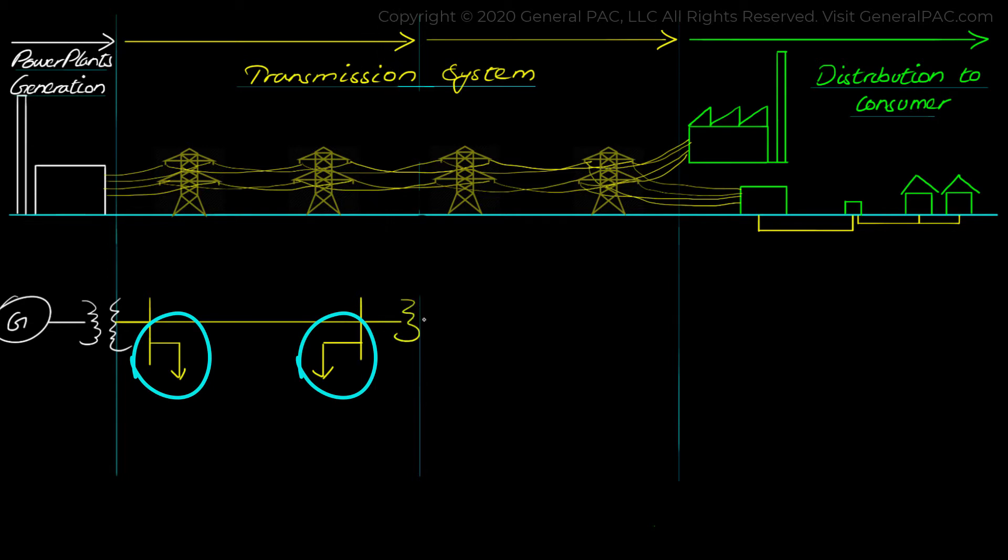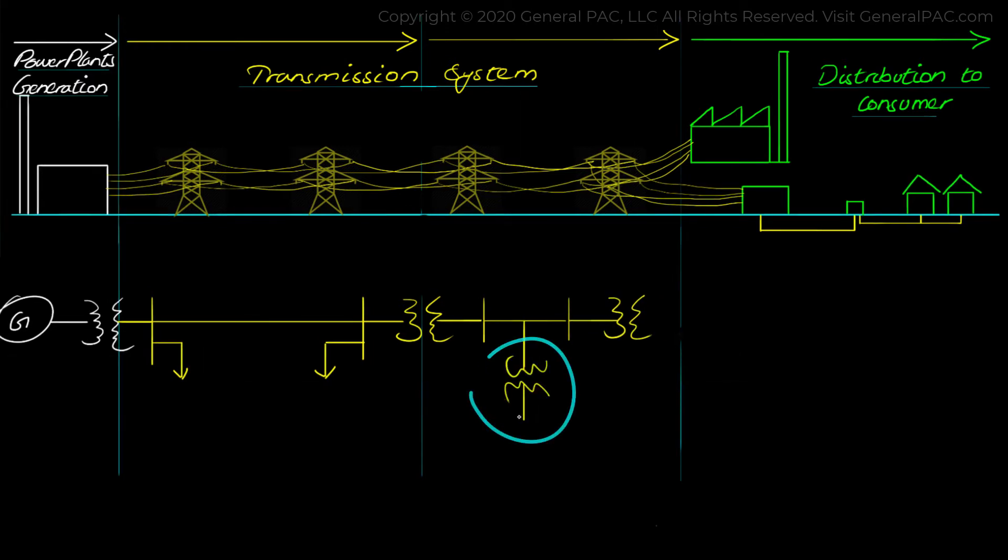And the main function for which the transmission system is responsible for is to deliver bulk energy from the generation side to the consumer end. And furthermore it provides multiple links for interchange of energy among different interconnection points.